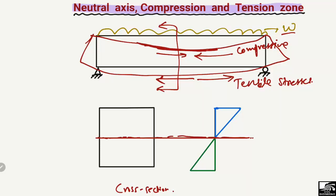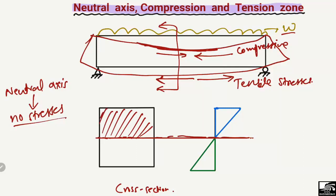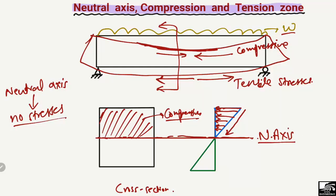The position or point where there are no stresses — no compression and no tension — is known as the neutral axis. Due to the load, the top portion of the beam will be fully in compression. If I draw the stresses, the compressive stresses will be maximum at the top of the beam and will decrease with the depth of the beam. At the neutral axis, the compressive stresses and tensile stresses will both be equal to zero.